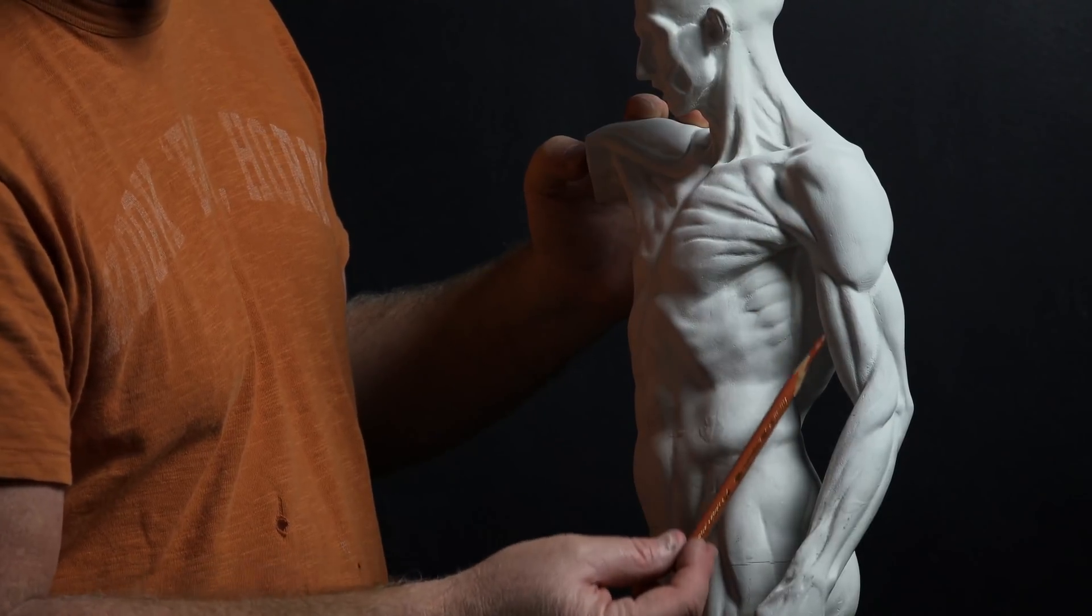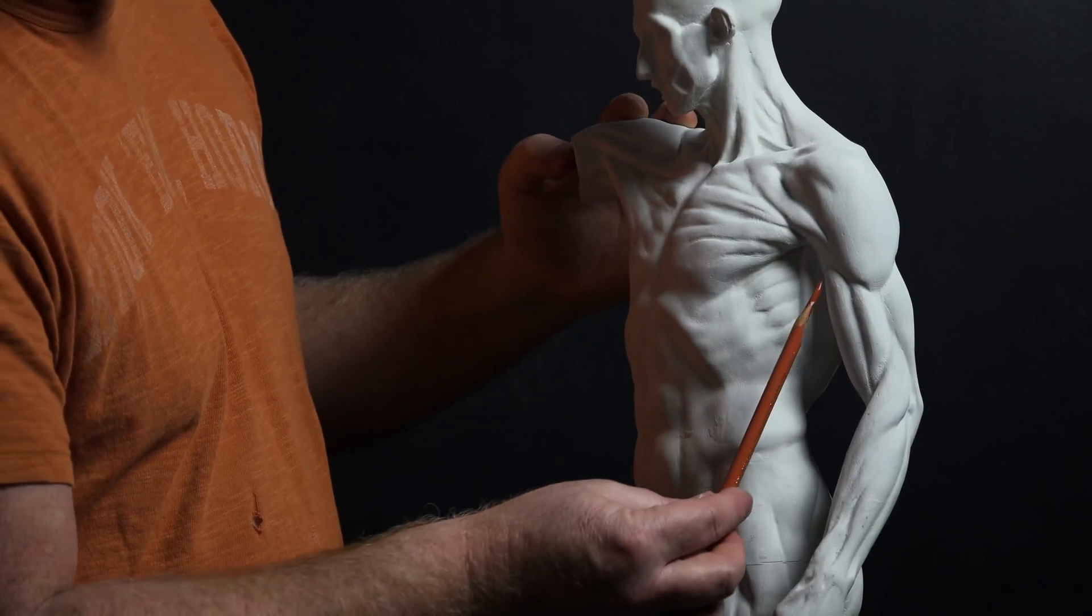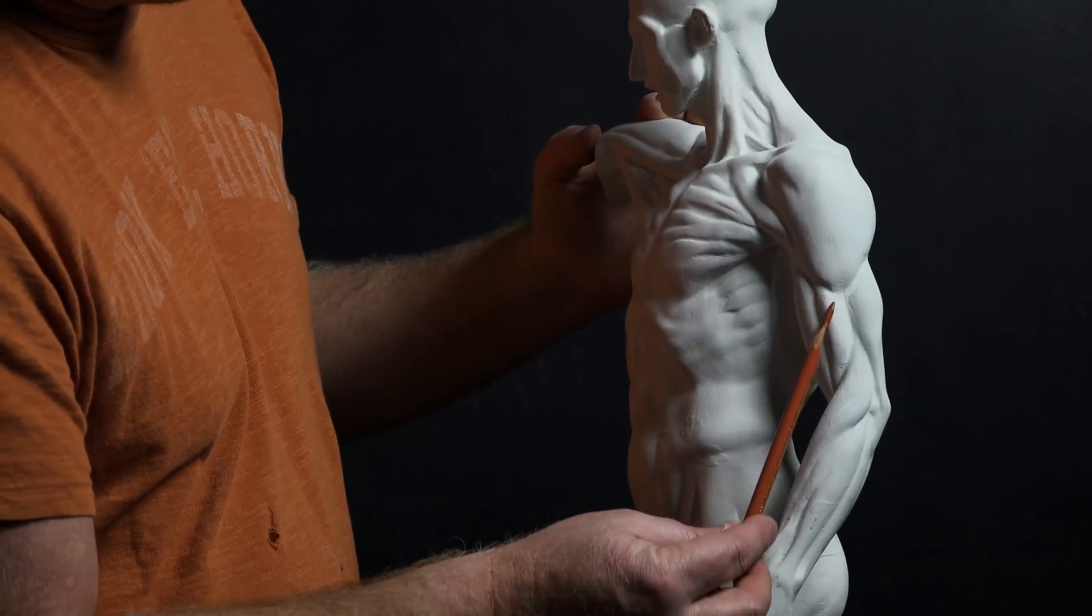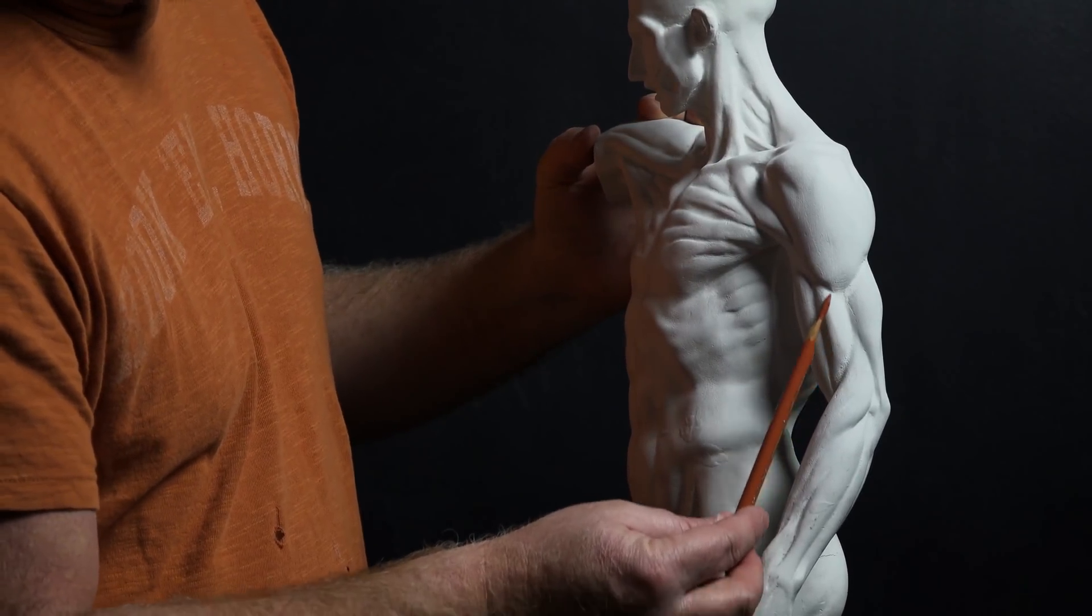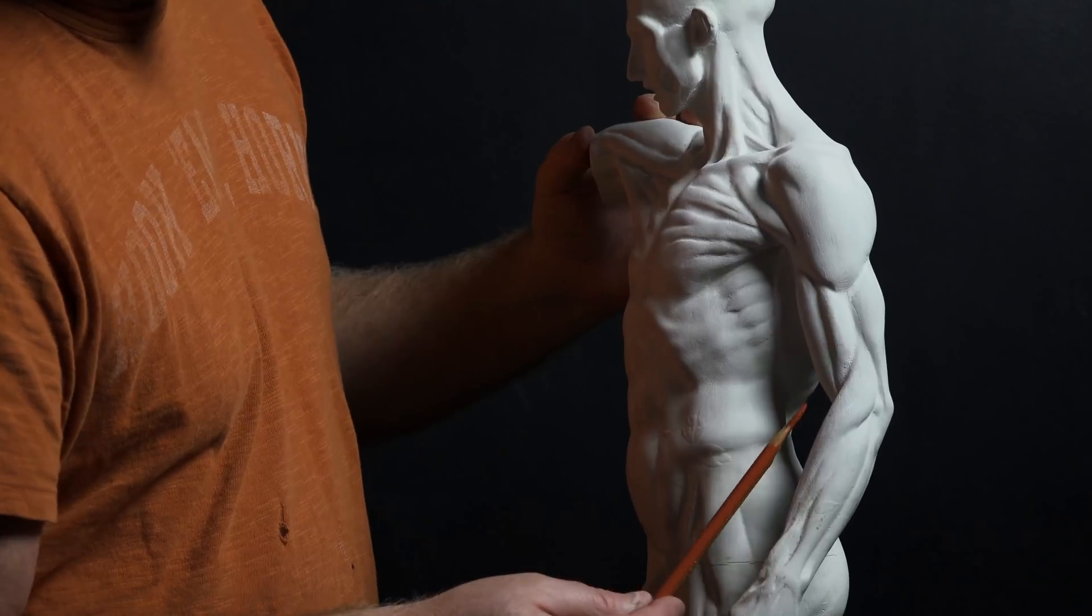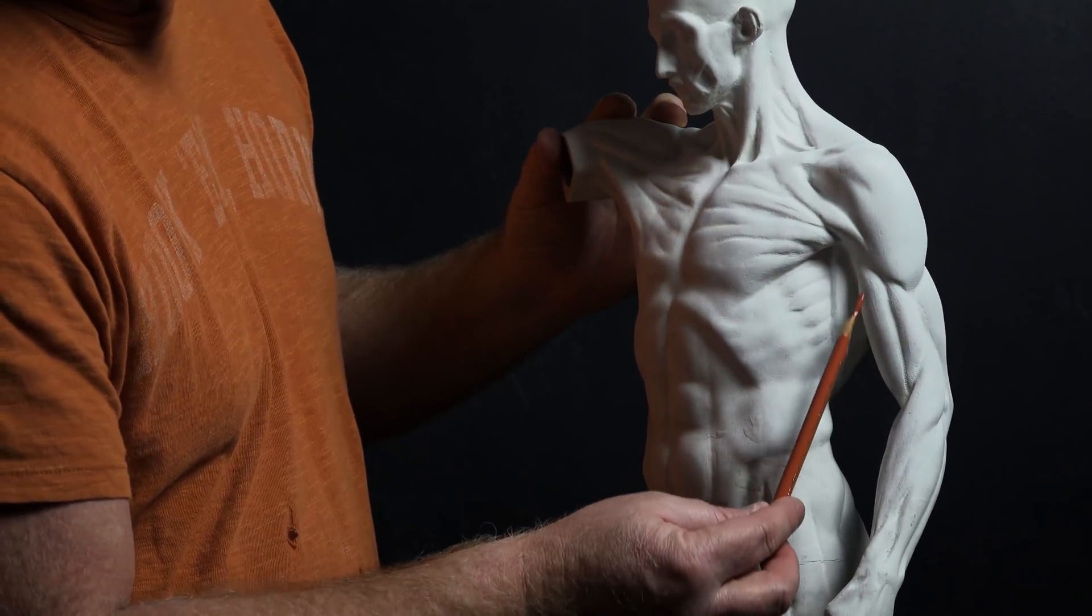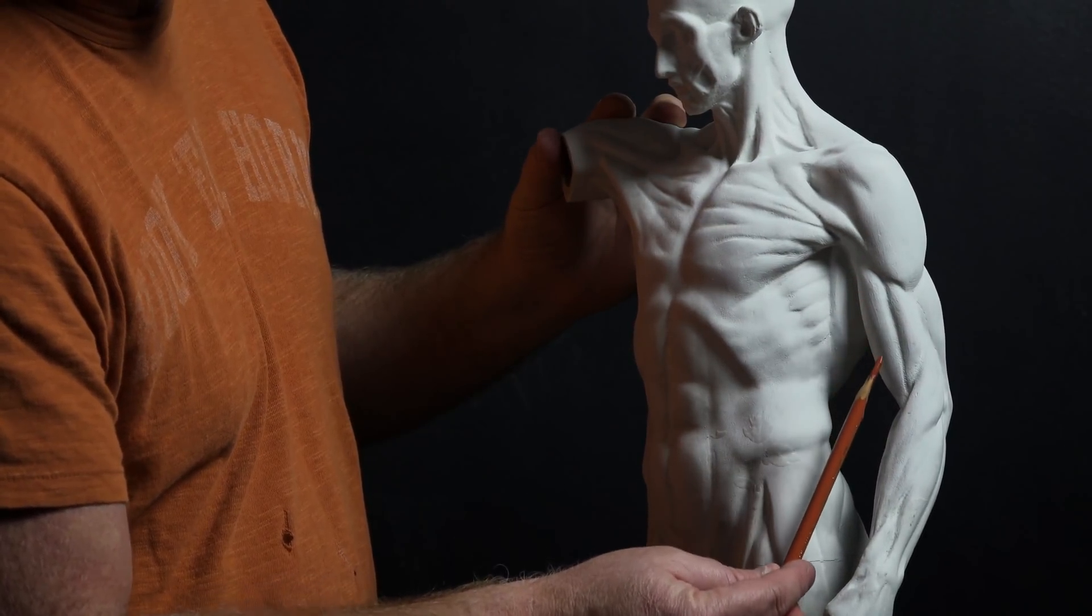Of course, you have the pectoralis minor up there attaching to the coracoid process coming down to three and five, and then the pectoralis major in through here attaching to the greater tubercle inside the deltoid tuberosity. Just remember the deltoid will cover over just a little bit of the pectoral. Now underneath, we have a series of muscles. We have the brachialis, that deeper muscle in through here. Then of course we have the biceps brachii in through here.